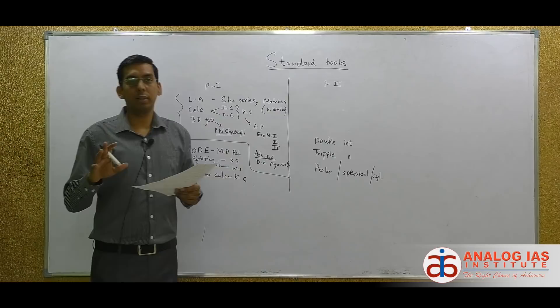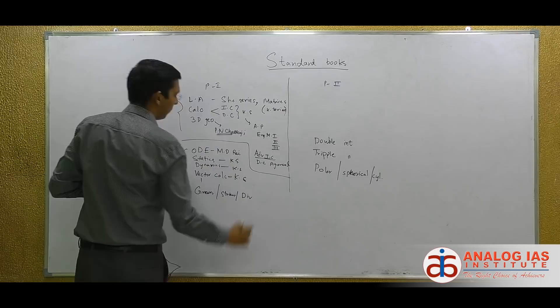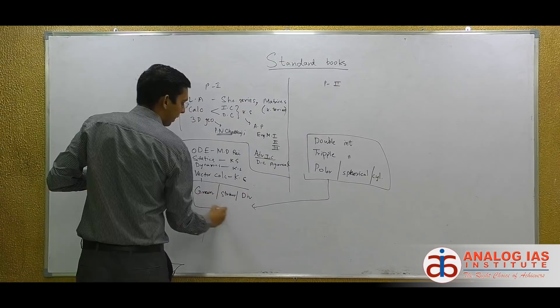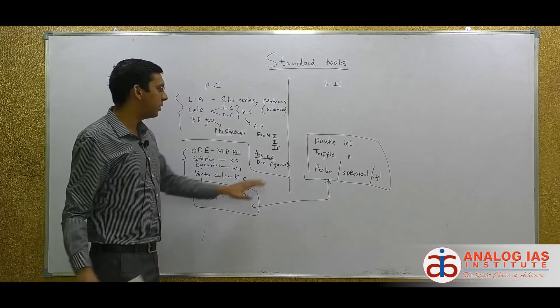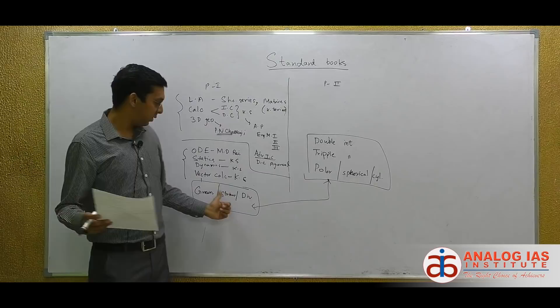It's a very thin book. The most important areas in vector calculus where maximum questions turn up are Green's Theorem, Stokes' Theorem, and Divergence Theorem. These are related to your double integration, triple integration, and polar spherical coordinates — they go hand in hand. So Green's, Stokes', Divergence combined with double, triple, and polar: you need a good understanding of how to integrate in triple coordinates so that you can apply it here.